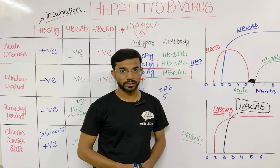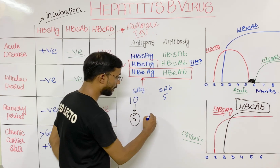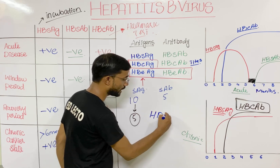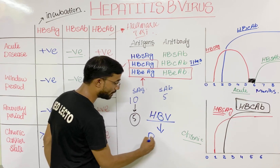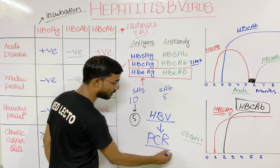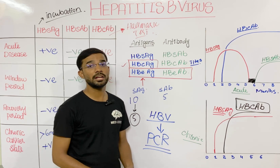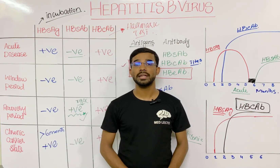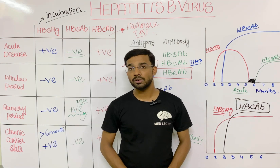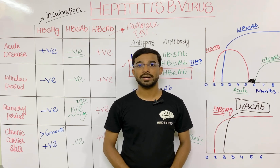Finally, Hepatitis B virus can also be detected with the help of PCR — polymerase chain reaction — in which we detect the DNA of the Hepatitis B virus. This is all about the lab diagnosis of the Hepatitis B virus.